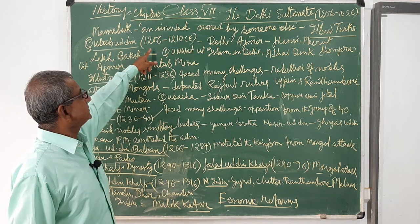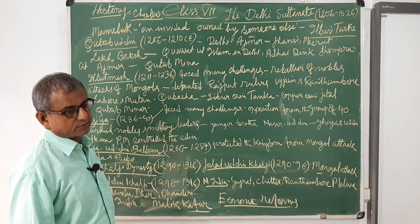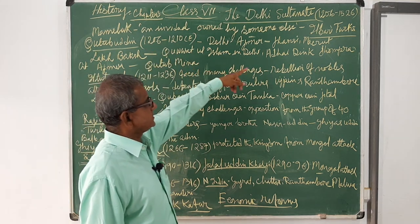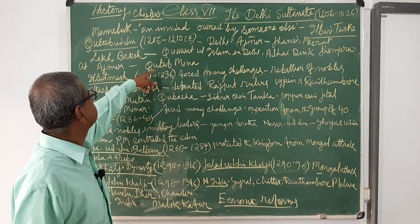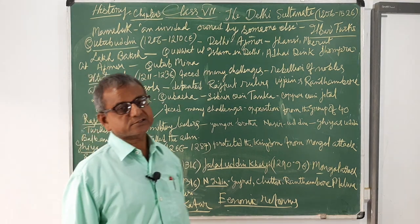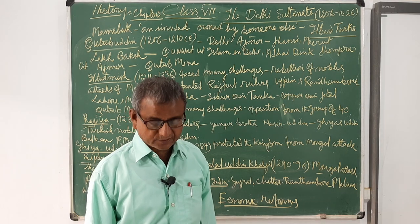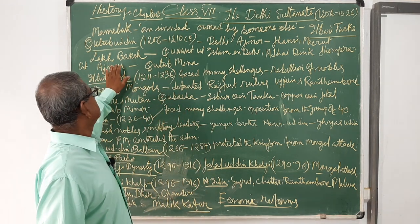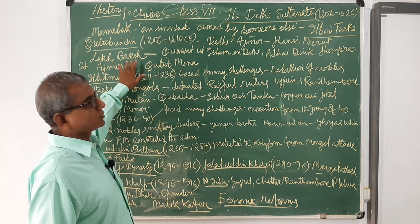Qutbuddin Aibak was placed on the throne and captured Delhi, Ajmer, Jhansi, and Meerut. He was a powerful and very generous ruler, known as 'Lakh Baksh' or the Donor of Lakhs.